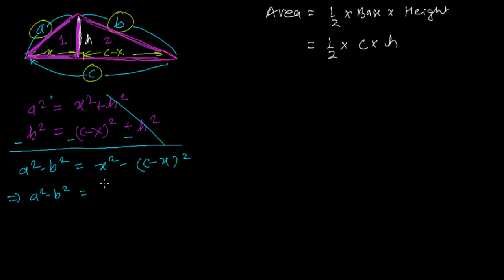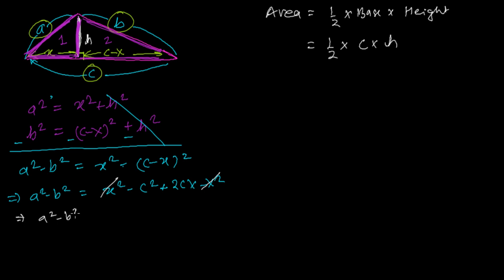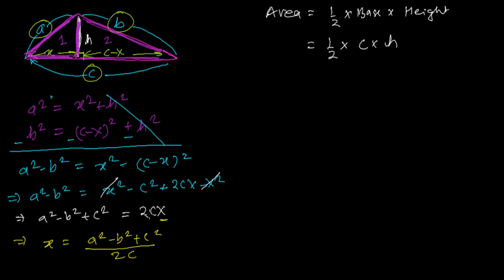Expanding further: a² − b² = x² − c² + 2cx − x². The x² terms cancel, so: a² − b² + c² = 2cx. Therefore x = (a² − b² + c²) / 2c.